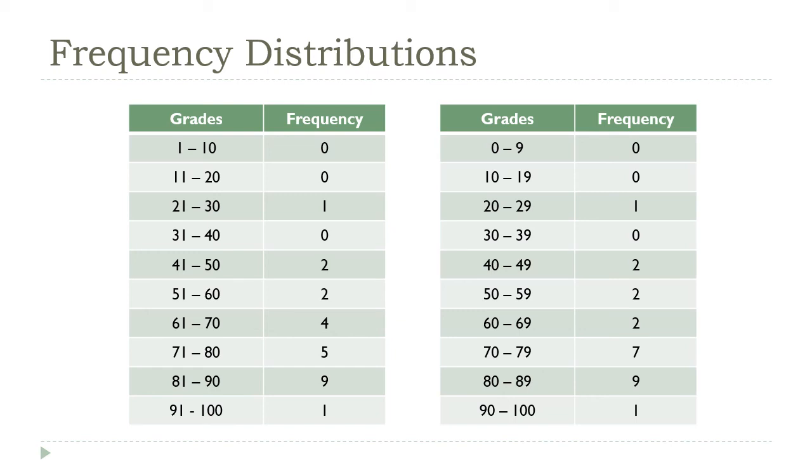If you take a look at the right hand distribution, it summarizes the same data set as the one on the left, except you can see that I've shifted the groupings. So I'm starting at 0 here, instead of 1, like the original one did. And the class widths are all still 10, except for the last one.